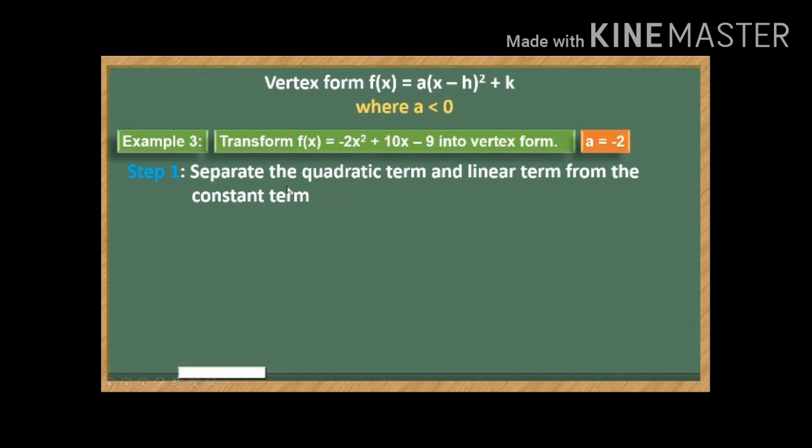The first step, of course, is to separate quadratic term and linear term from the constant term. So we have that one. Then step 2, factor out the coefficient of quadratic term.